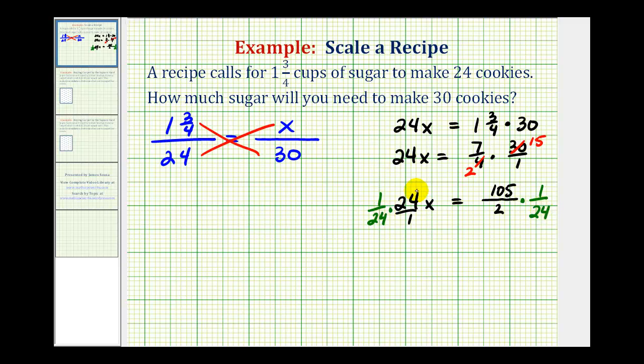Notice on the left side twenty-four over twenty-four simplifies to one. So we just have x equals this product here but we do want to simplify this before multiplying.